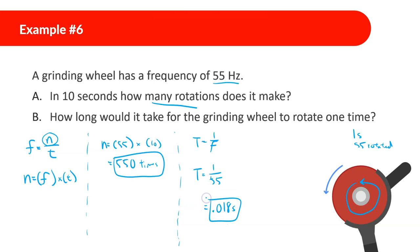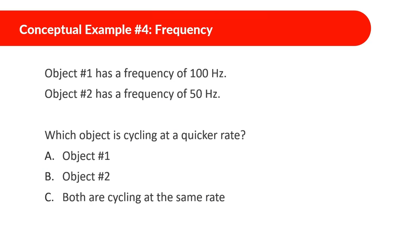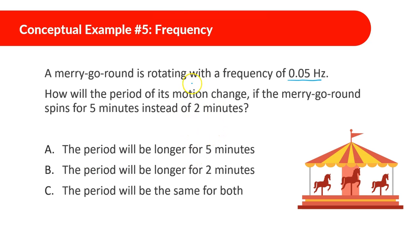Object one has a frequency of 100 hertz and object two has a frequency of 50 hertz. Which object is cycling at a quicker rate? Object one rotates 100 times per second while object two only rotates 50 times per second, so object one is cycling at a quicker rate.